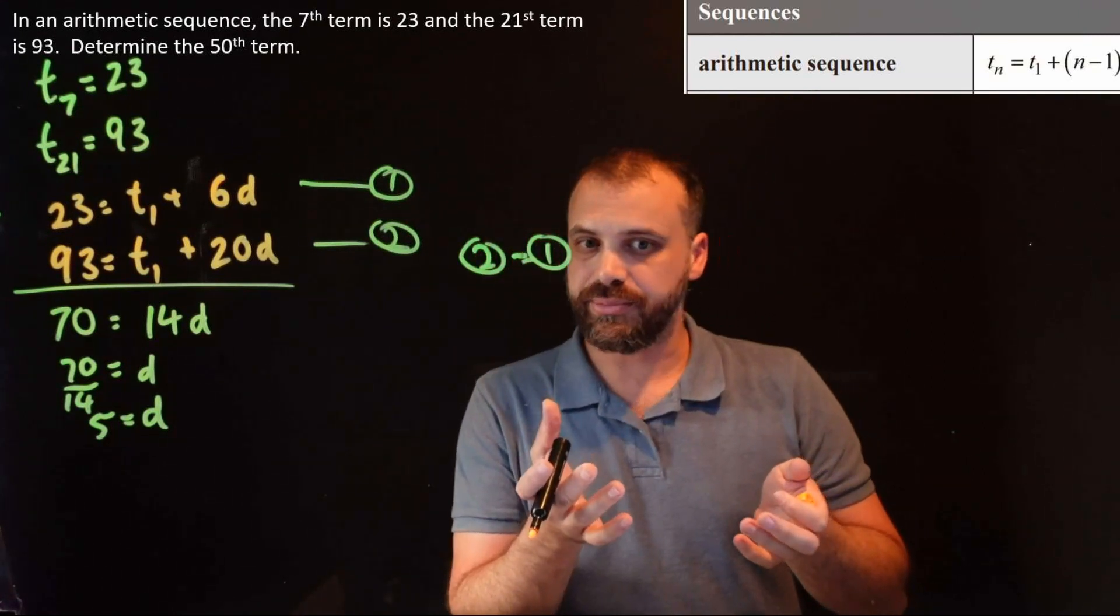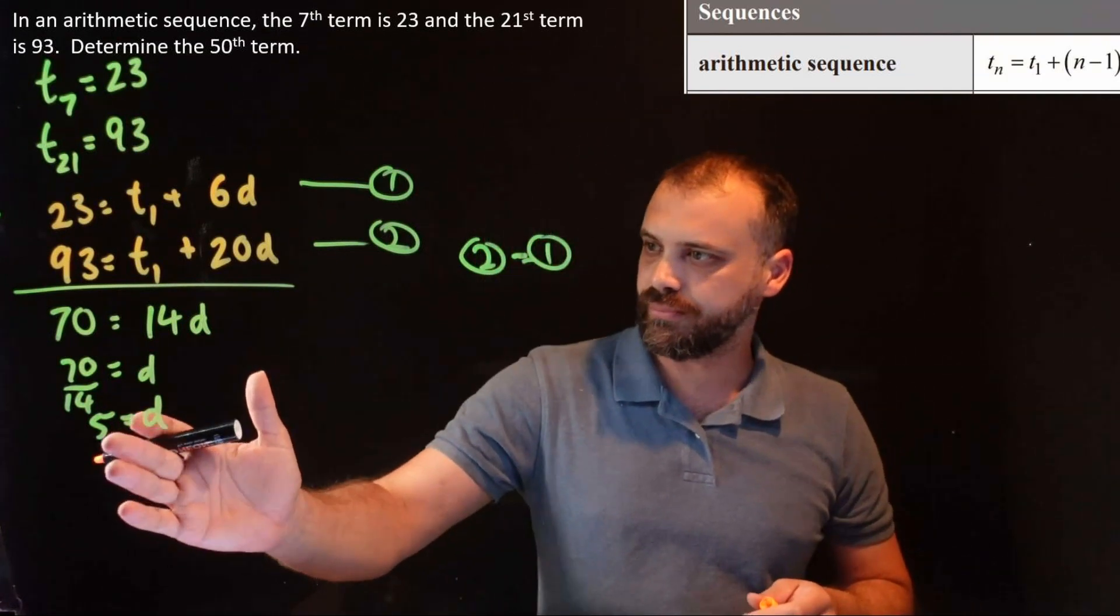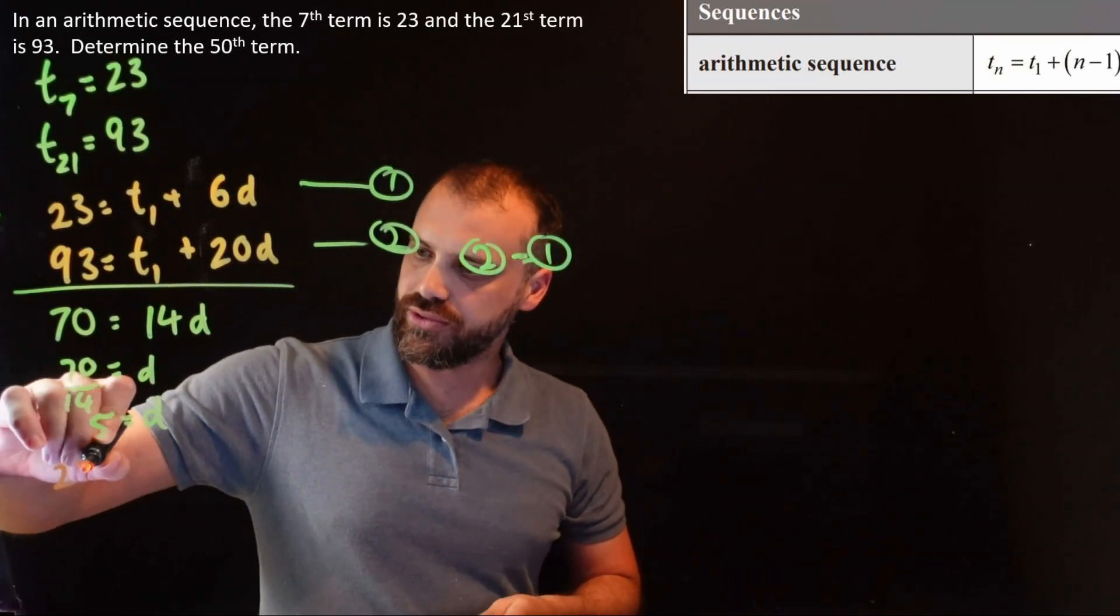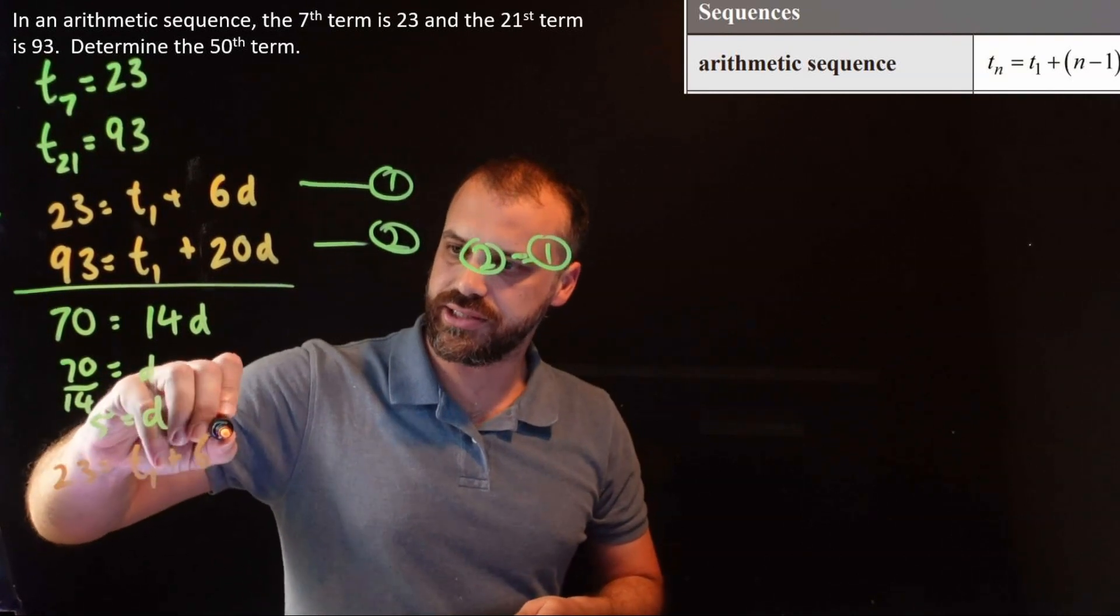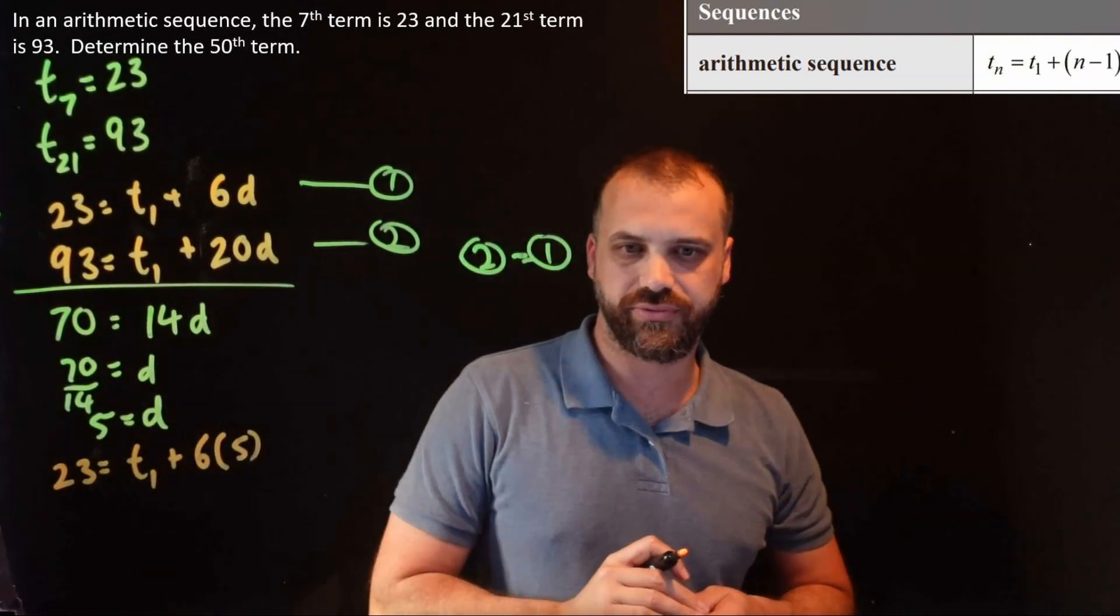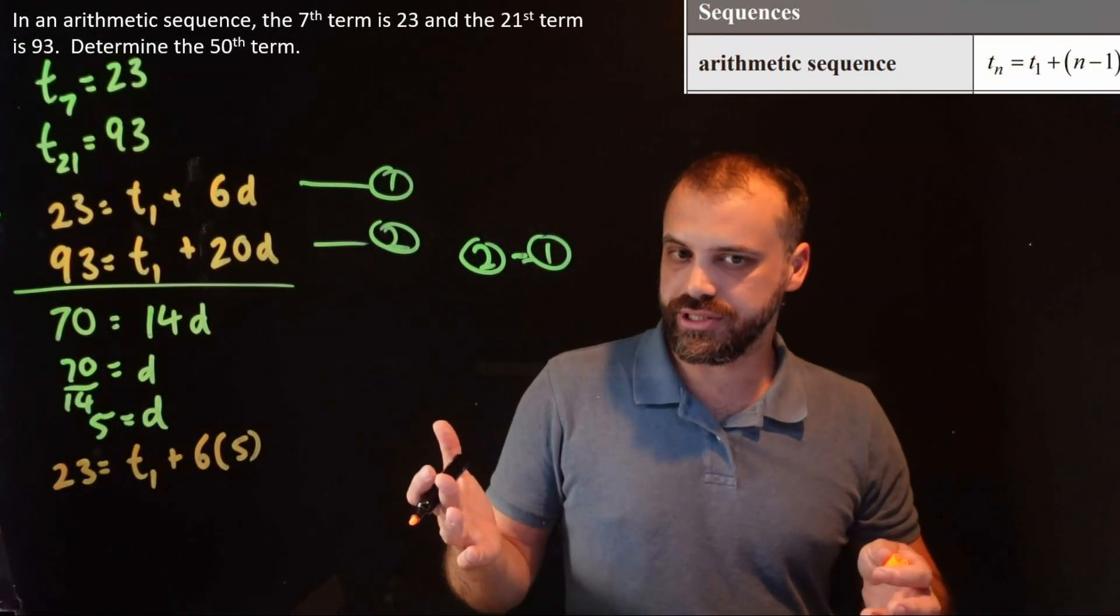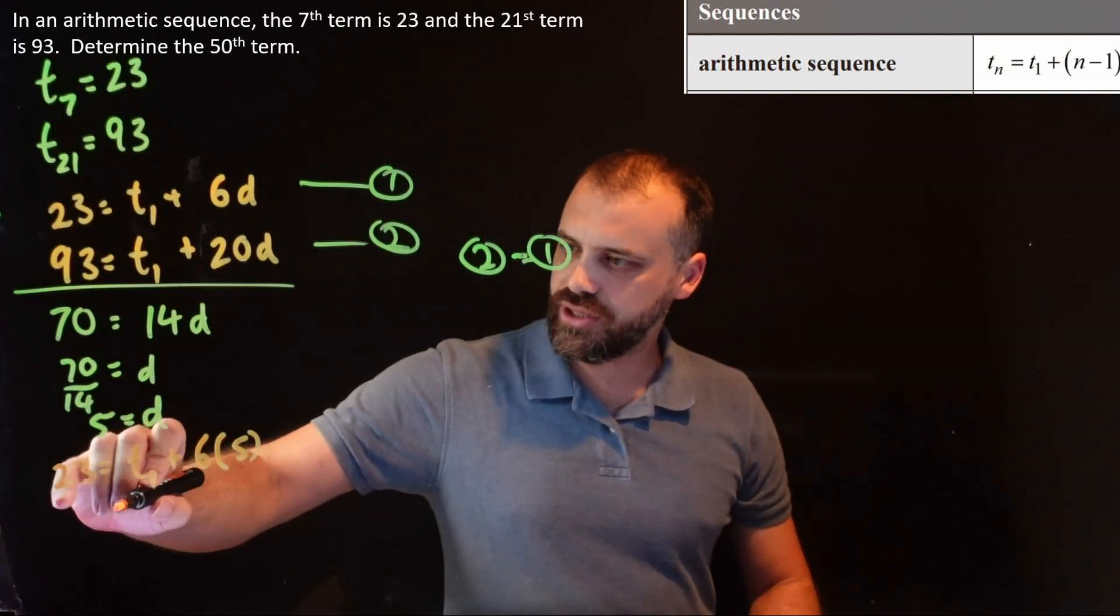So I'm going to get rid of that. I'm going to keep moving down this side. Now that I know that my common difference, that looks like a pair of sunglasses. Now that I've got a common difference of 5, I can put that 5 into this equation. So I have 23 equals T1 plus 6 times 5.